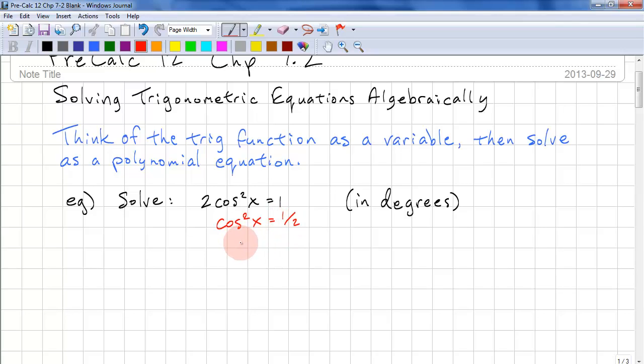For this particular example, we don't have to substitute a variable because it's straightforward. We just do the square root of both sides. Cos x equals plus or minus square root of 1 half. We notice that this is a special ratio. The other way to see this is plus or minus 1 over the square root of 2. Now we take the inverse cosine of both sides and we get x equals inverse cos of plus or minus 1 over root 2.